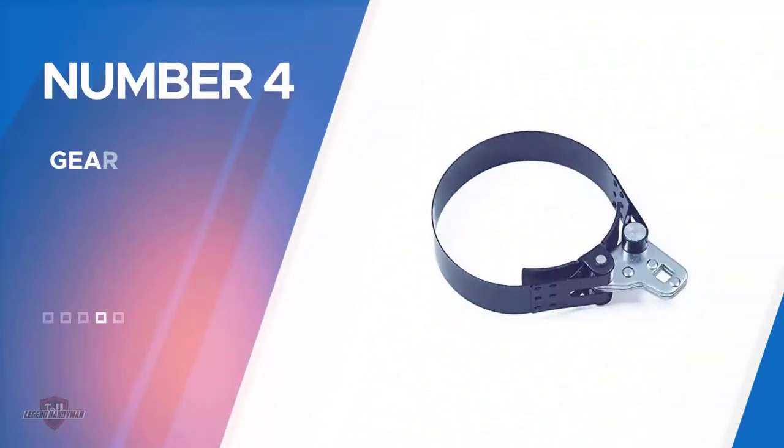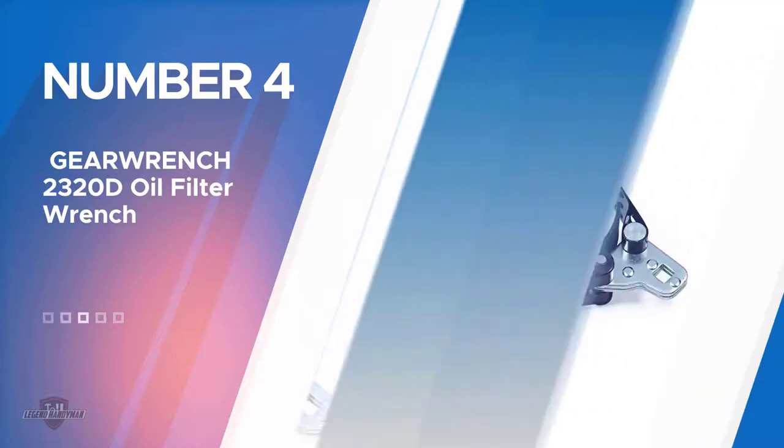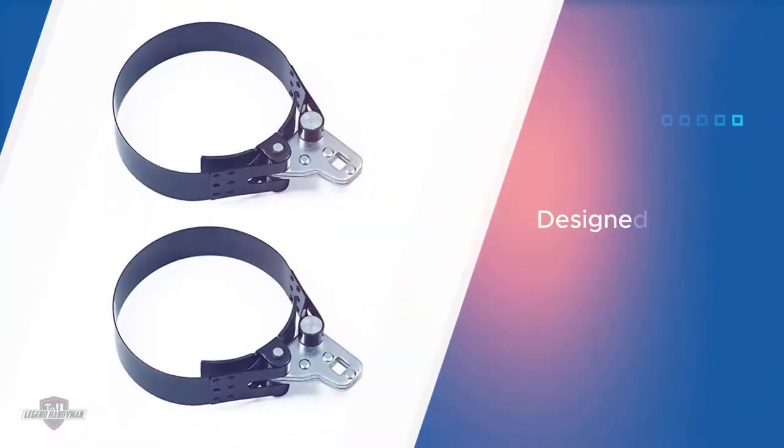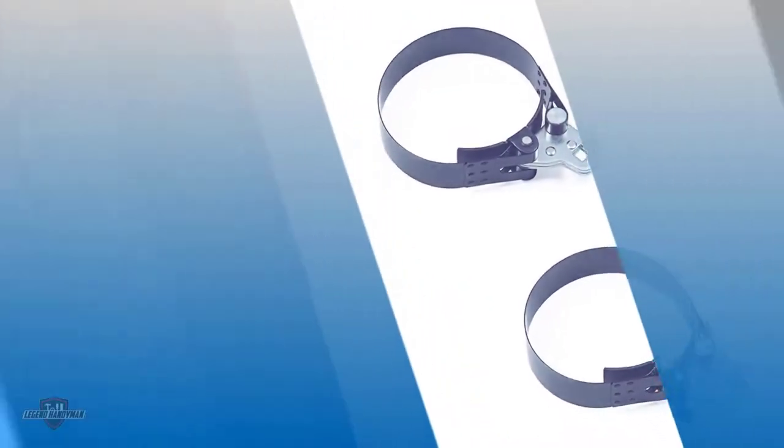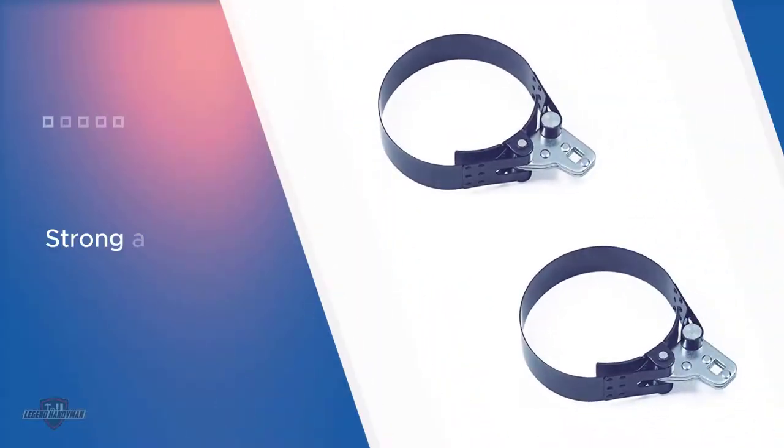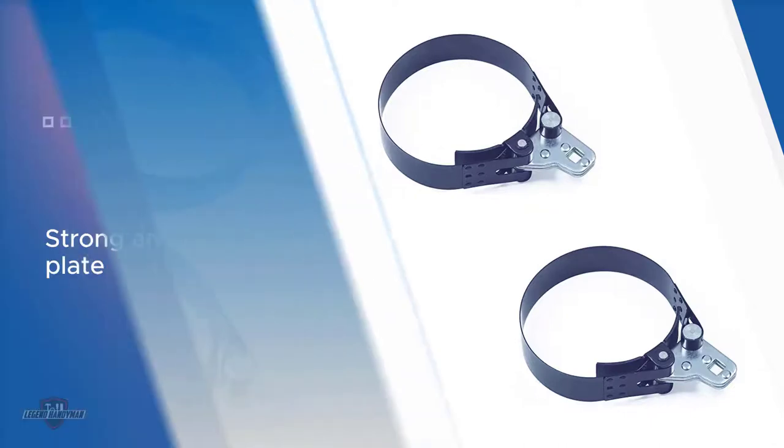Number four: Gear Wrench 2320D oil filter wrench. Gear Wrench offers two different types of oil filter wrenches: a band type wrench and a strap type wrench. The band type wrench fits 3.75 to 4.5 inch filters and features a wider band for better grip. Designed for high torque requirements, this wrench uses a strong anchor plate to help remove excessively tight filters from your car.